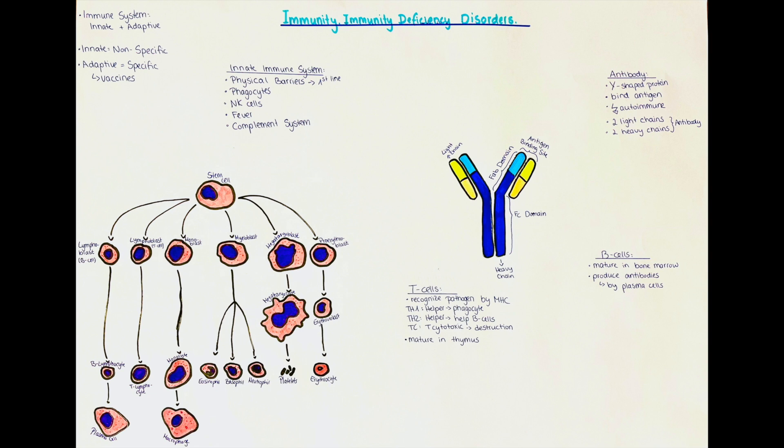Let's start now with the B lymphocytes. These are both differentiated from stem cells within the bone marrow and they also mature in the bone marrow, hence the name B lymphocytes, B for bone marrow. They are cells responsible for the production of antibodies, which also are called immunoglobulins.